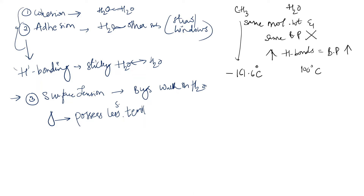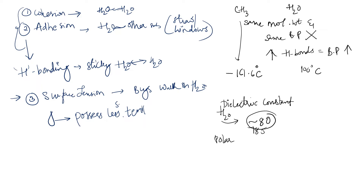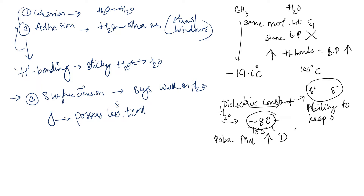Another interesting concept is the dielectric constant. The dielectric constant of water is approximately 80 — more precisely 78.5. Polar molecules always have a high dielectric constant, represented by capital D, and there are no units for dielectric constant. Dielectric constant means the ability to keep opposite charges apart — the ability to keep opposite charges apart is the dielectric constant.